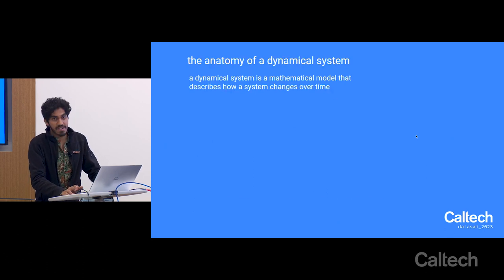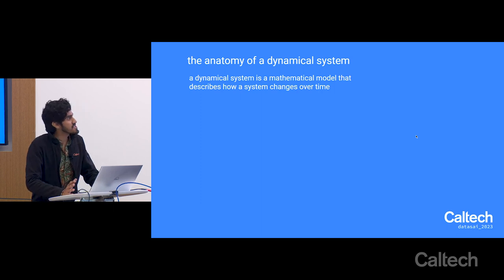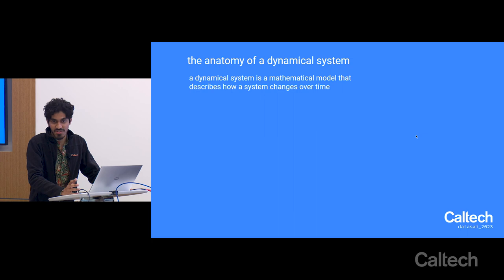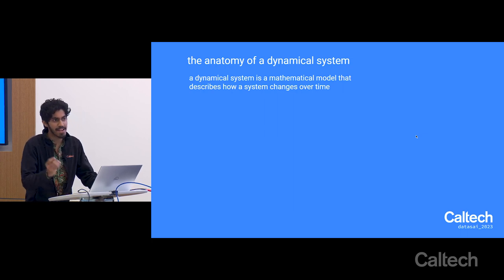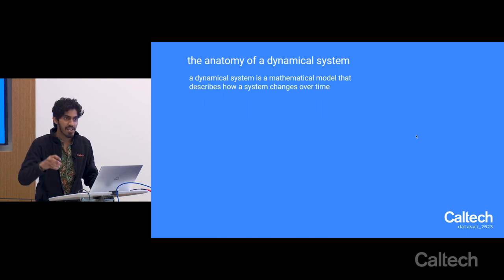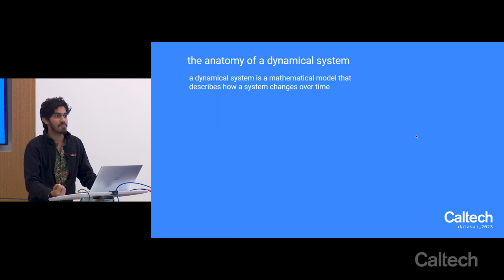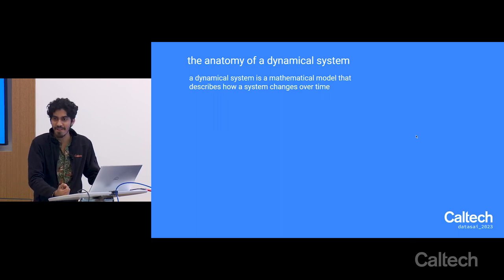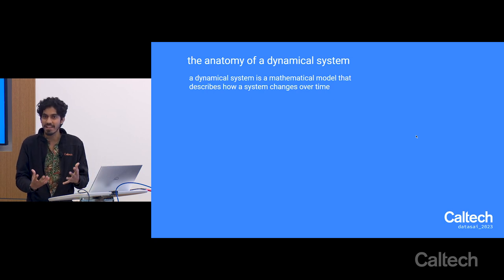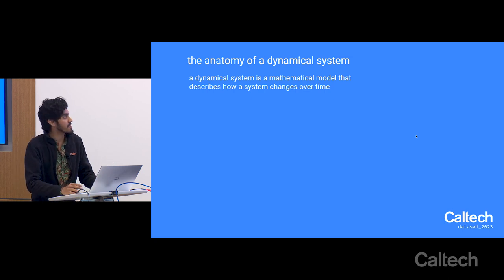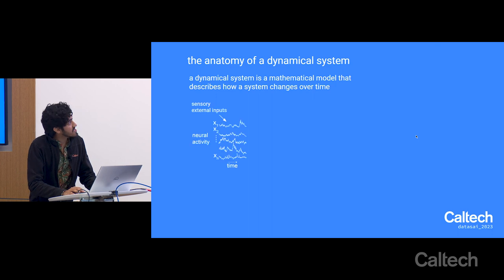Dynamical systems are simply a way of describing any system that changes over time. At the heart of it, it's a super simple idea—a pendulum moving, an apple falling to the ground in a predictable way. These are dynamical systems. We're not talking about some fancy equation; it's really just any quantity that changes over time. In the context of neural circuits, it's often good to think about dynamical systems as operating on two different levels.